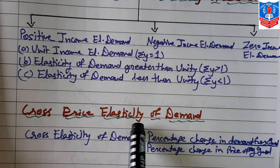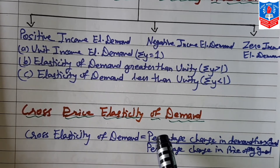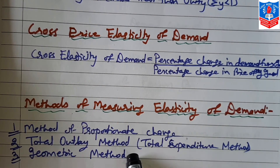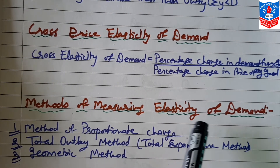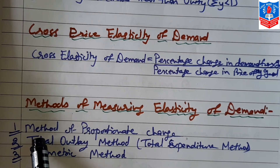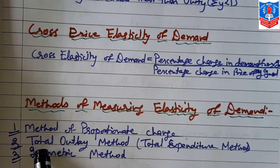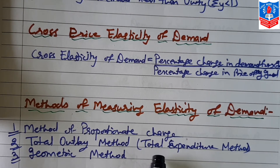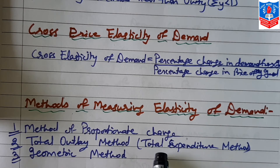This covers cross price elasticity of demand as well as income elasticity of demand. Connected to this topic, the textbook also mentions methods of measuring elasticity of demand. There are three methods: number one, the method of proportionate change, which we covered in detail under price elasticity; number two, the total outlay or total expenditure method; and number three, the geometric method. The last two are not in the current syllabus and will be covered later.